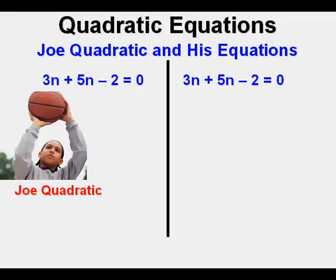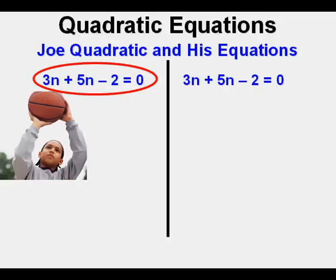This is Joe Quadratic, a basketball player, with his equations. We're going to look at how a quadratic equation comes about. Here Joe has a linear equation, something like you've seen before, 3n plus 5n minus 2 equals 0.